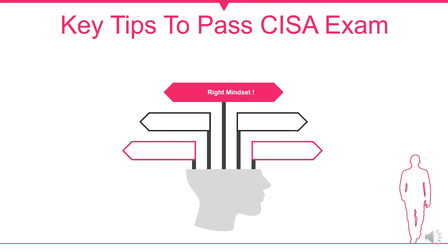Information security overall can be divided into two branches: one is technical and another is managerial. If you want to be a penetration tester or ethical hacker, you are moving towards the technical branch — those are the people who go for CEH or OSCP courses. When you are doing CISA, you are aiming to become an IT auditor, Chief Information Security Officer, or Information Security Manager — this comes under the managerial aspect of information security.